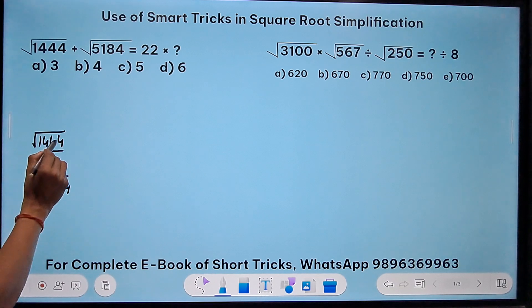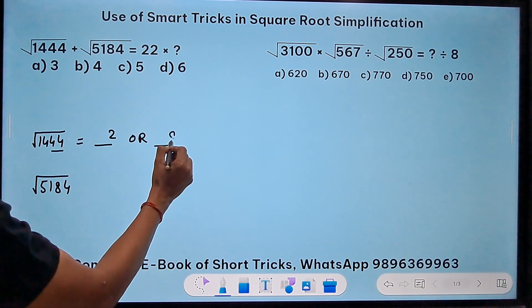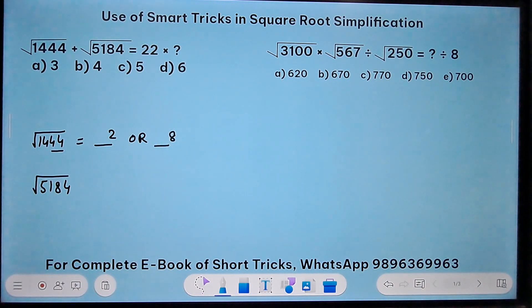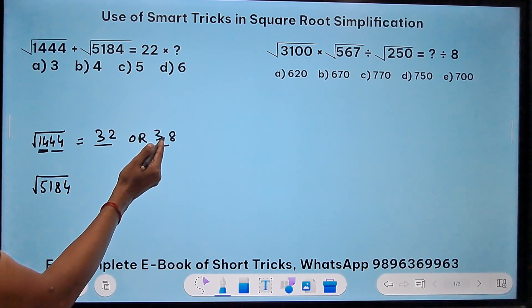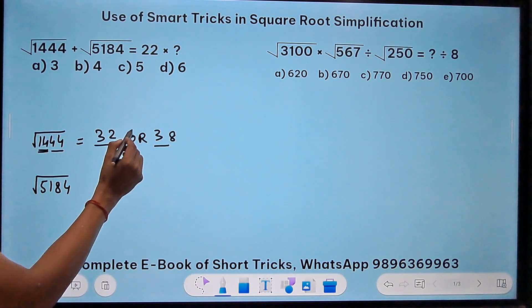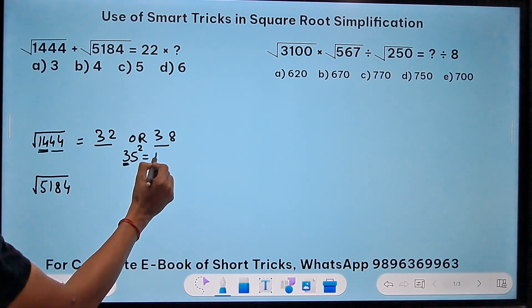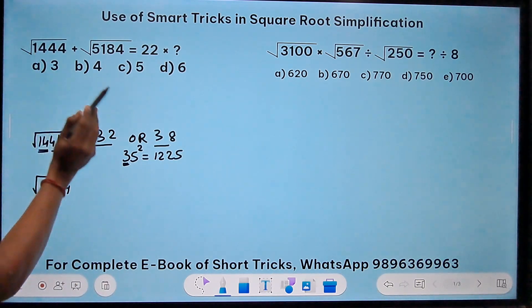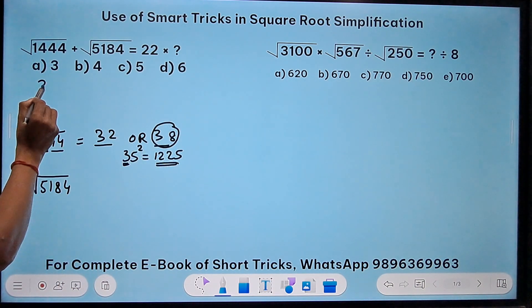So how do I do this? The last pair ends in four, so my answer ends in two because two square is four, or my answer ends in eight because eight square is 64 which ends in four. The first tablet here is 14. Under 14, the nearest perfect square is three square nine. So three occupies the tenth place. So either your answer is 32 or your answer is 38. Now to find out which one is the correct answer, you can take the square of the intermediate number, that is 35.